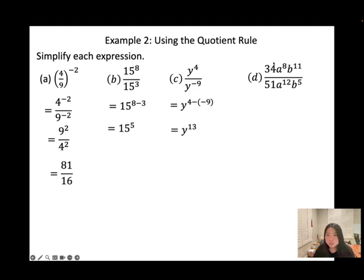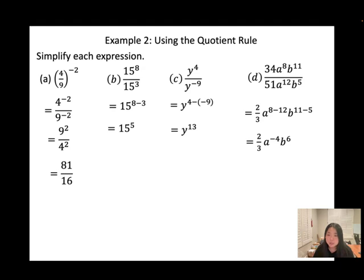For d, simplify the numbers first, then handle exponents with the same base: a to the power of 8 minus 12, and b to the power of 11 minus 5. Divide the coefficients by 17 to get 2 over 3. After subtracting, you get a negative exponent — for the final answer, always keep positive exponents, so flip it to the bottom. Final answer: 2b to the power of 6 over 3a to the power of 4.